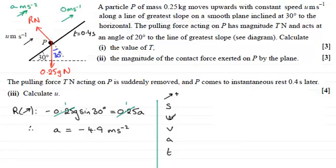U, well, U is the thing we're trying to find. V, the final velocity, well, that's equal to 0. The acceleration, A, we've just worked out, is negative 4.9. And T, we've got, which is 0.4.